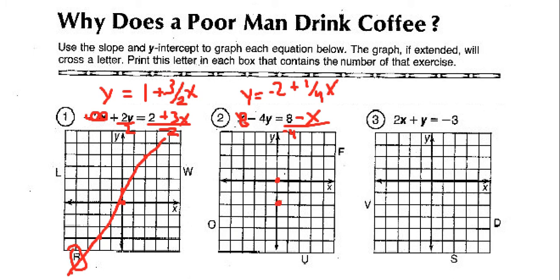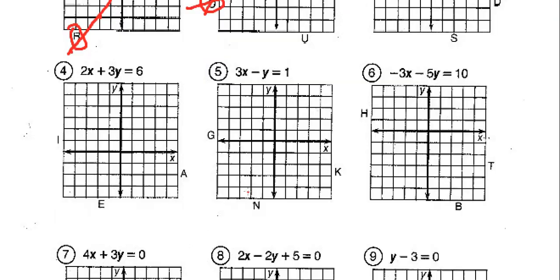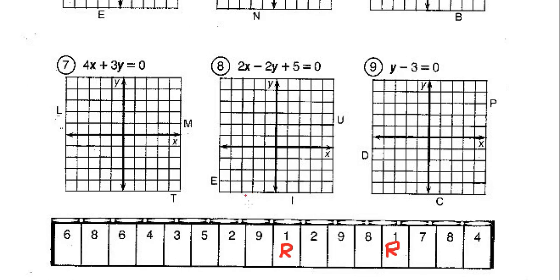And up 1 over 4, up 1 over 4 — it's more over there — down 1 over 4. And that's going to go right through the O. So number 2 is going to be O.